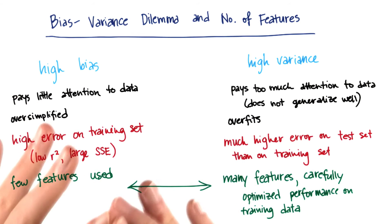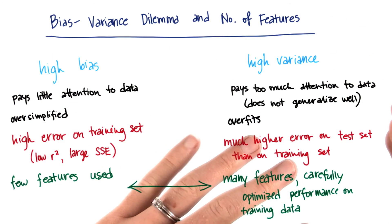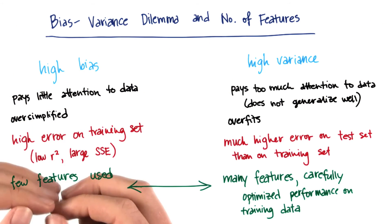So there's this trade-off between the goodness of the fit and the simplicity of the fit, the number of features that you have to use to achieve that goodness of fit.